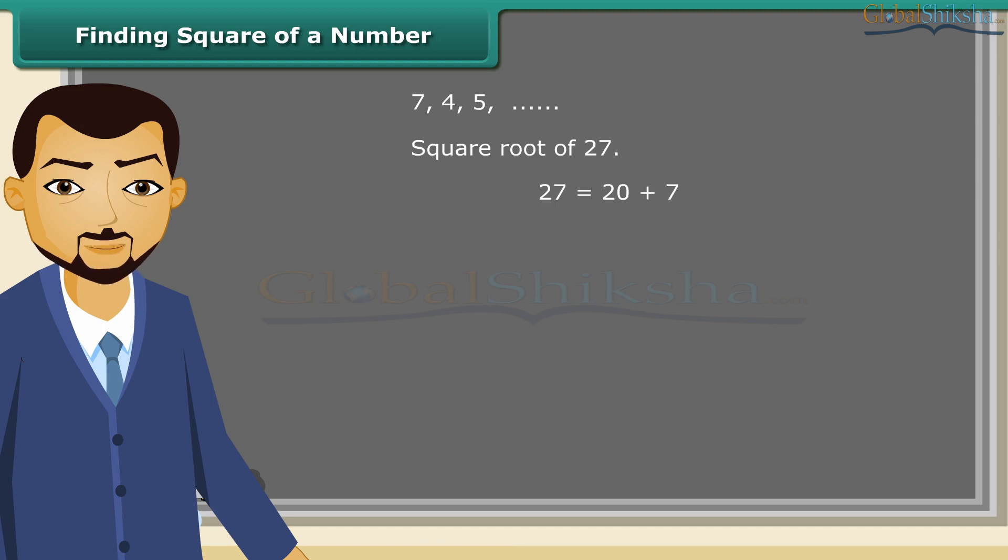We know 27 is a sum of 20 and 7. Therefore, a square of 27 is equal to 20 plus 7 whole square is equal to 20 into 20 plus 7 plus 7 into 20 plus 7 which is equal to 20 square plus 20 into 7 plus 7 into 20 plus 7 square which is equal to 400 plus 140 plus 140 plus 49 which is equal to 729.